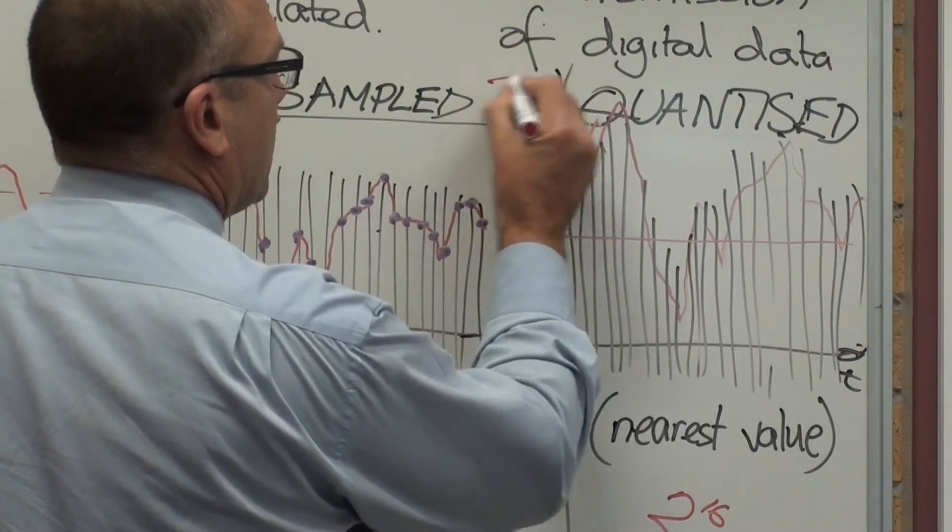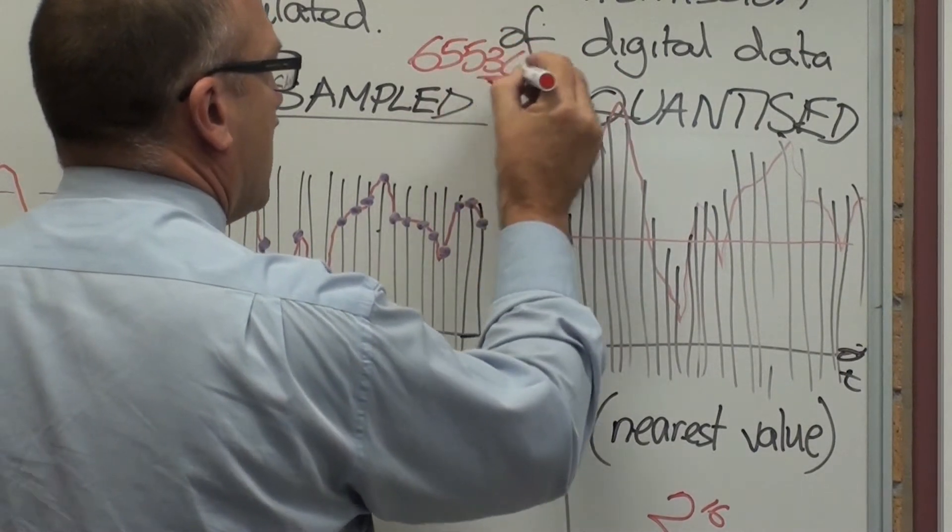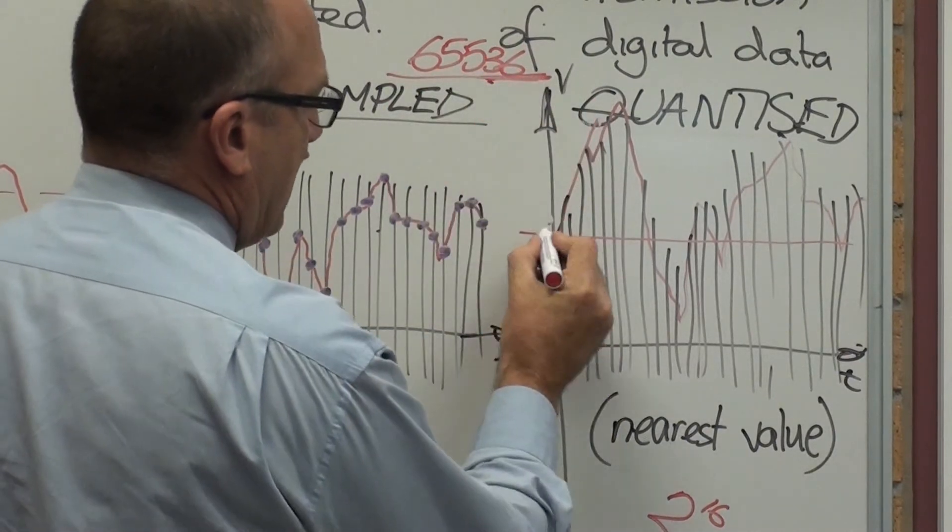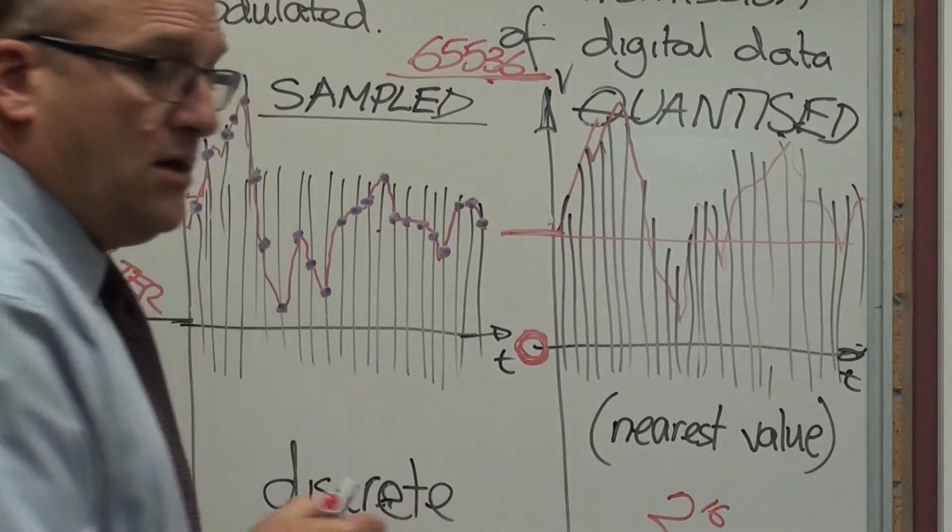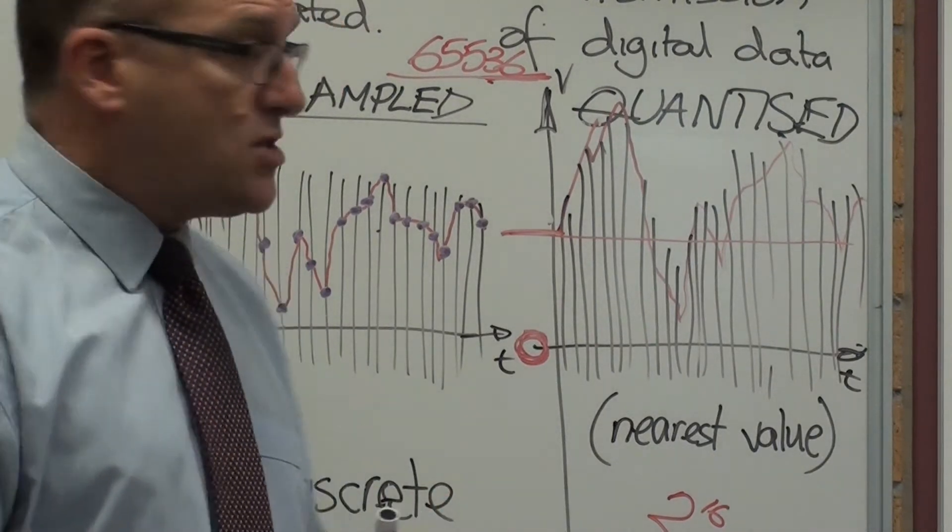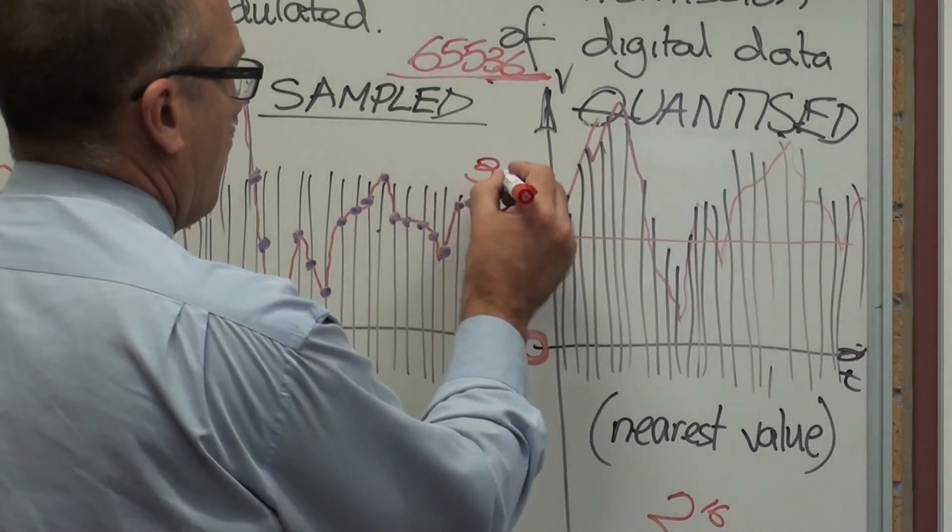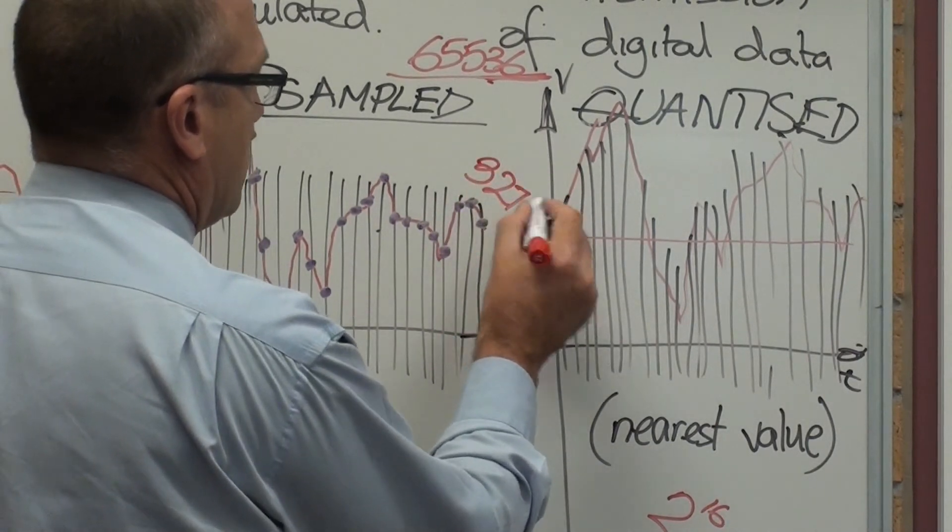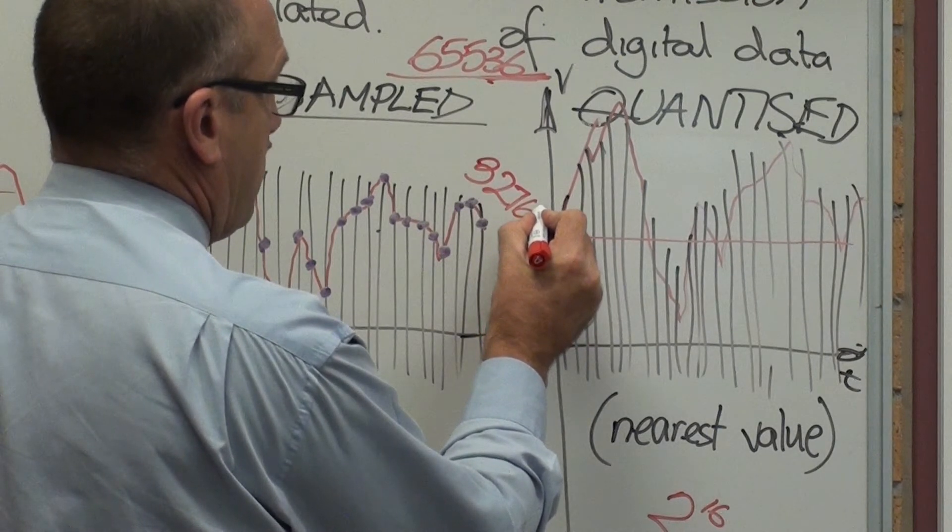So that means up the top, the maximum value we can have is 65,536. And that makes the middle value here, there's 0. In the middle, it is half of 65,536 is 32,768.